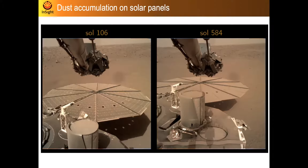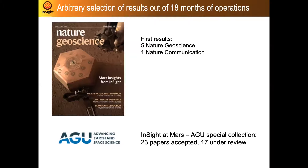Out of 18 months of operation, several important results have been obtained. These were presented in five major science papers and one major communication as the initial InSight release, plus a special collection counting about 40 papers. I will not have time to present them all, so I apologize for not covering all the great science accomplished through atmospheric studies, geology, and magnetic observations. Here I will focus only on results concerning the interior of the planet.